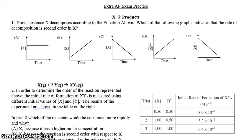Pure substance X decomposes according to the equation above. It's a very general equation, X decomposes, so we have only one reactant. Which of the following graphs indicates that the rate of decomposition is second order? Whenever you graph a rate experiment, you will get a graph depending on what you do with the concentration. You can either graph the concentration itself versus time, the natural log of X, or the inverse of X. Those three graphs are possible.